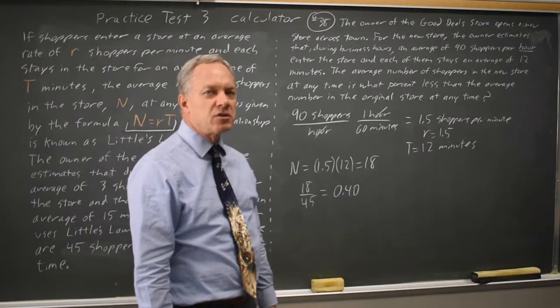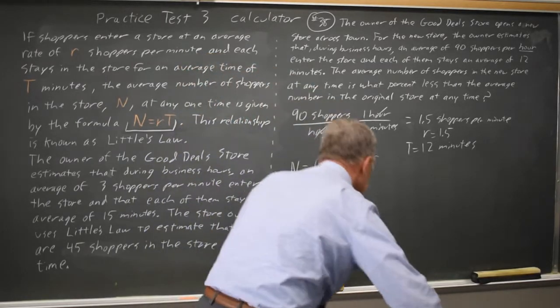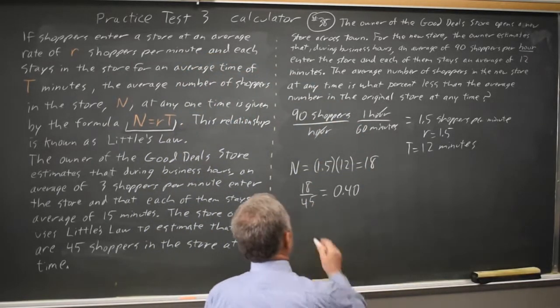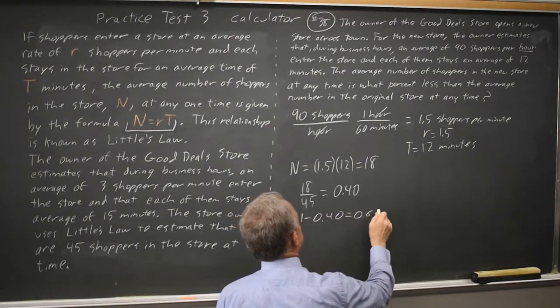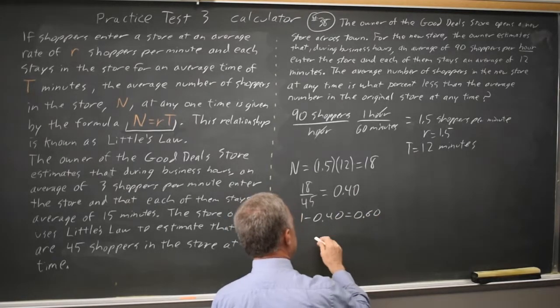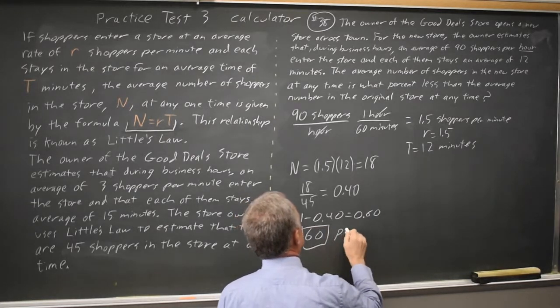40% of the original number is 60% less. So 1 minus 0.40 equals 0.60 is the amount we're less, 60% less.